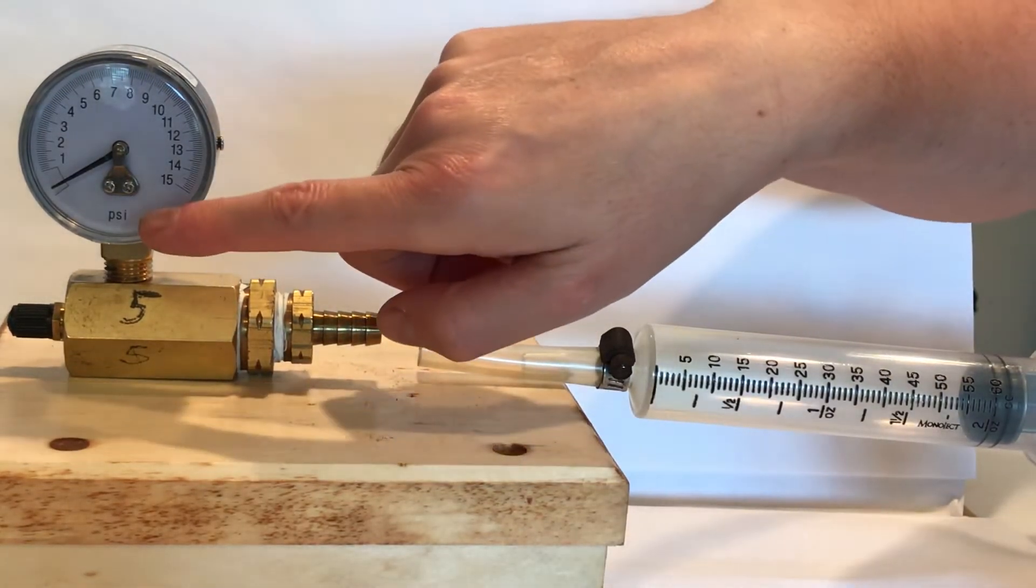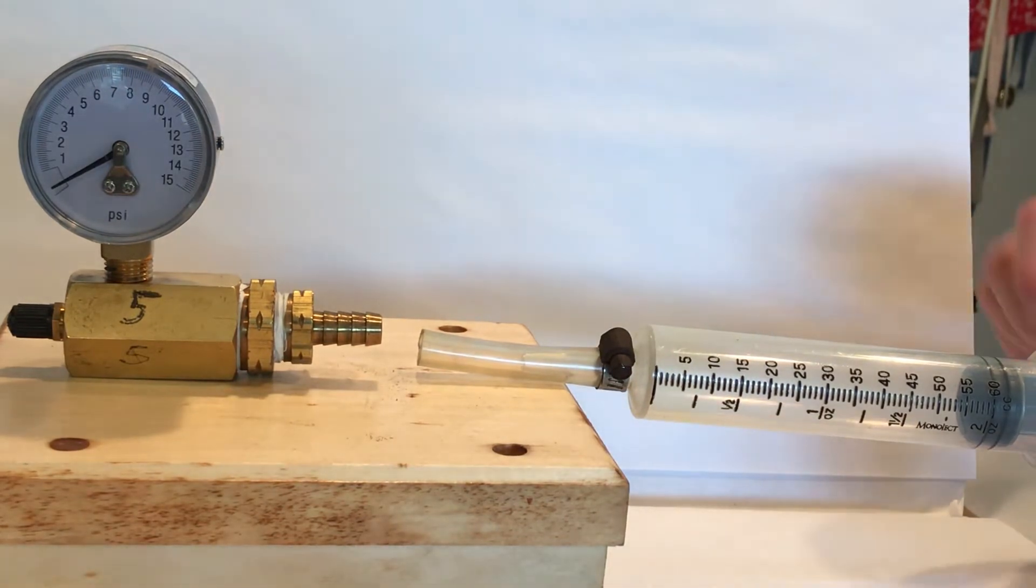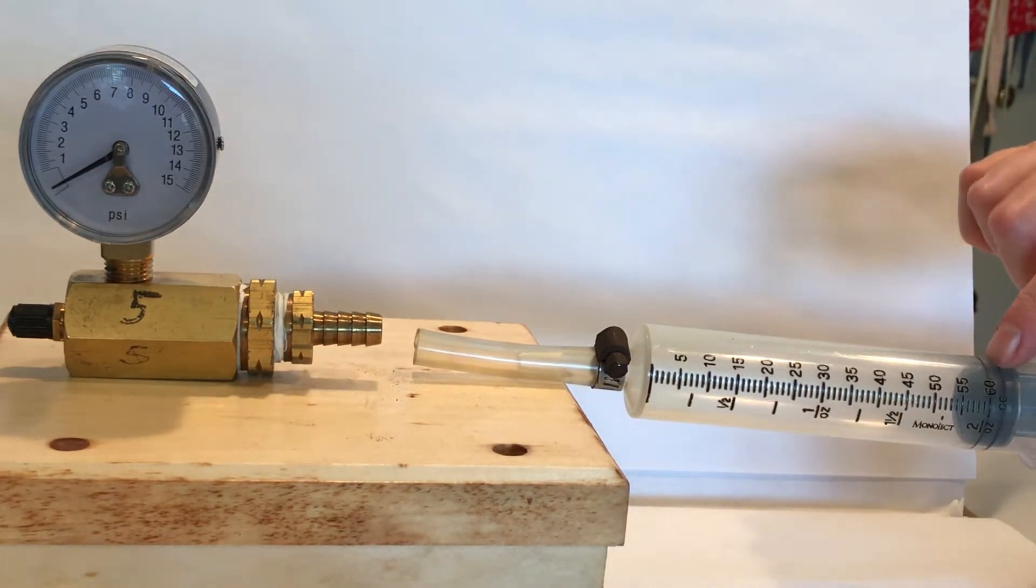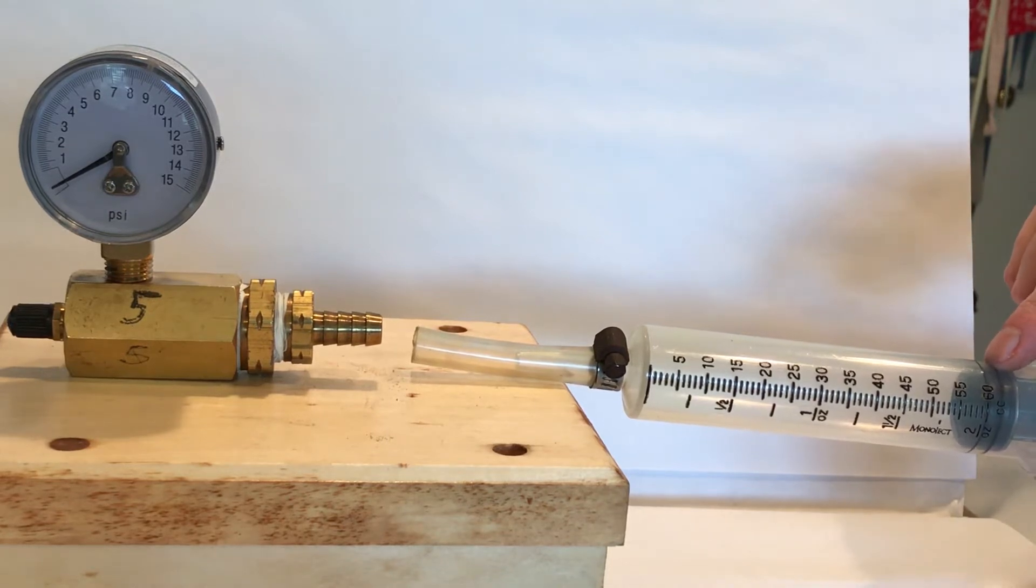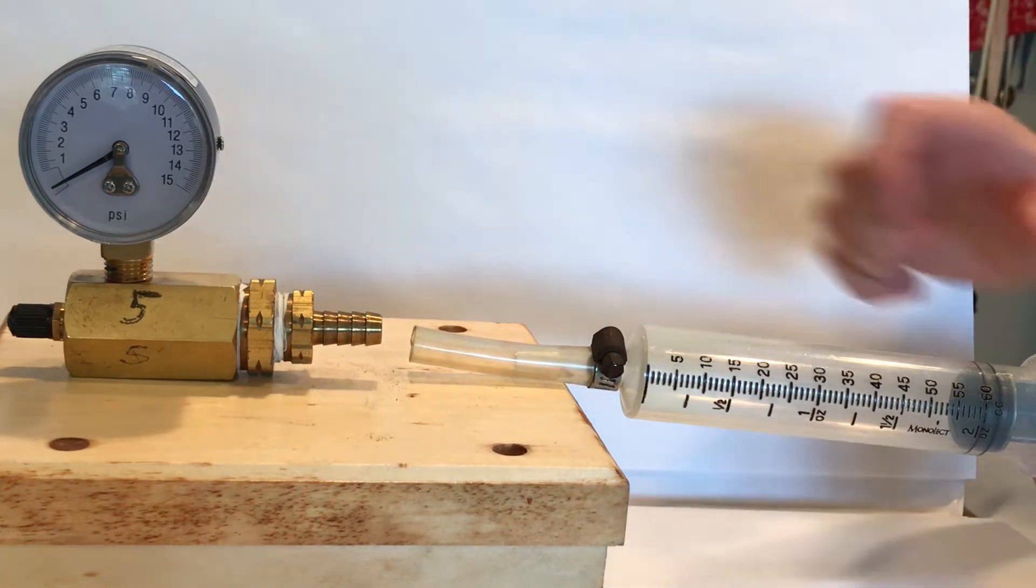You can see that the pressure gauge is in units of psi, pounds per square inch. On the syringe we're at 60 cc's, or 60 milliliters, or 60 centimeters cubed for the volume of air in this syringe.